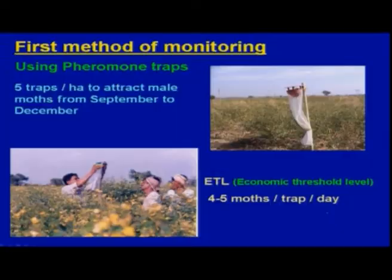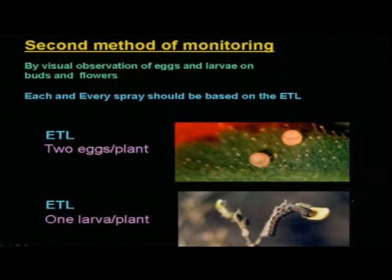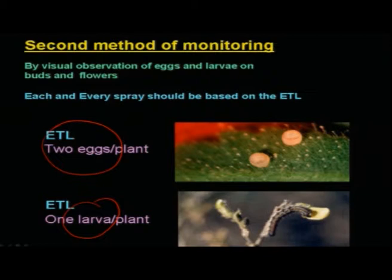In the first method of monitoring, we can use pheromone traps — set up about 5 traps per hectare to attract male moths. The average economic threshold level (ETL) suggested is 4 to 5 moths per trap per day to initiate insecticide application. In the second method, we can use egg population or larval population counts: 2 eggs per plant or 1 larva per plant is the ETL. Randomly count 10 to 15 plants, average the count, and if it crosses the ETL, immediately go for control measures.